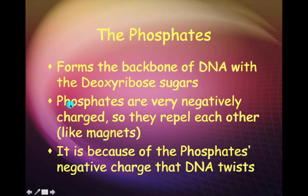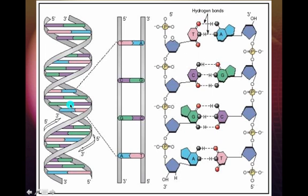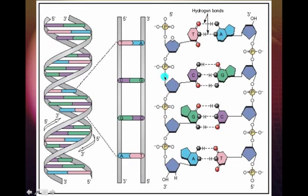The phosphates are in between each of the ladder rungs — they only bond to the sugar. The sugars are then attached to the nitrogen bases. So the pattern goes: phosphate, sugar, phosphate, sugar, phosphate, sugar on both sides, giving you the double helix — two strands, one on each side.